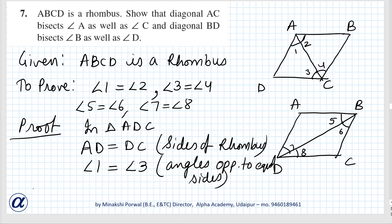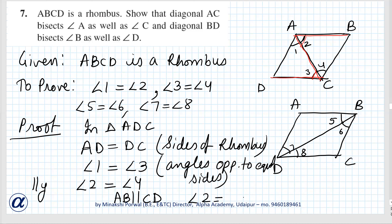Similarly, angle 2 equals angle 4. Now ABCD is a rhombus, therefore AB is parallel to CD because it is also a parallelogram. If AB and CD are parallel and AC is a transversal, then angle 2 equals angle 3 — alternate interior angles.